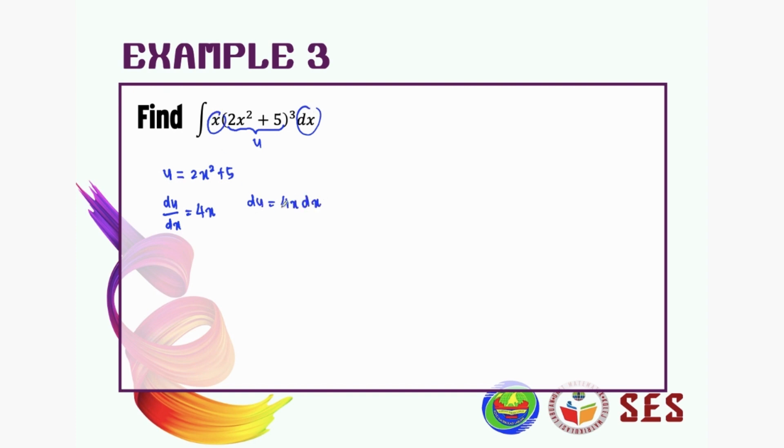But notice that we only need x dx. So what we need to do for the number 4, we bring it to the left hand side, so it's gonna become 1 over 4 du equal to x dx.